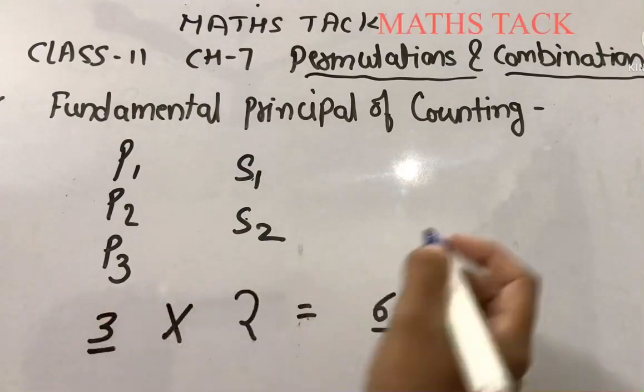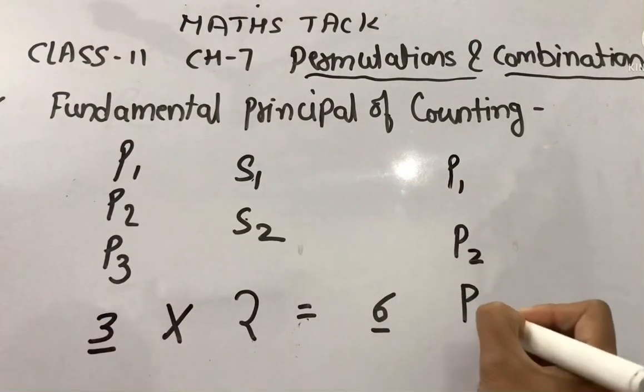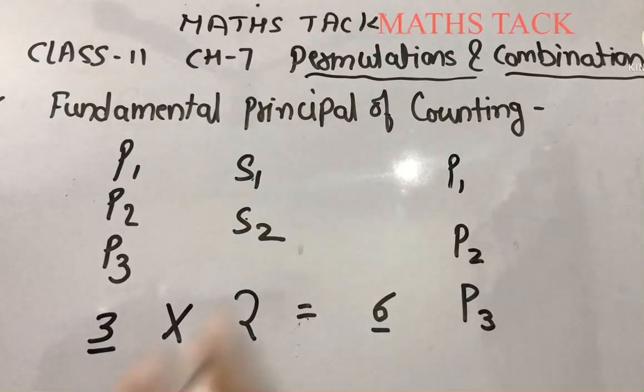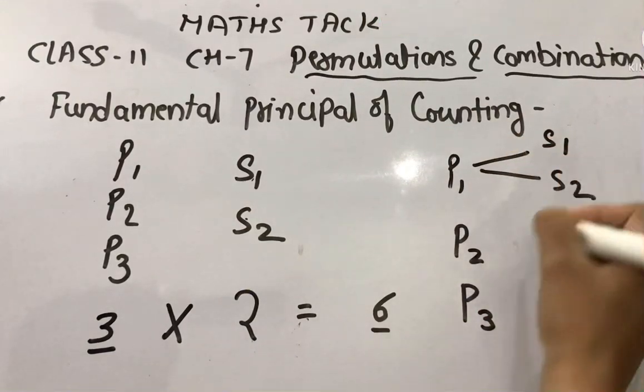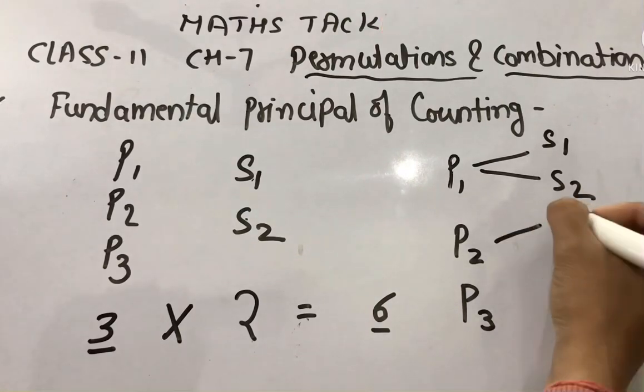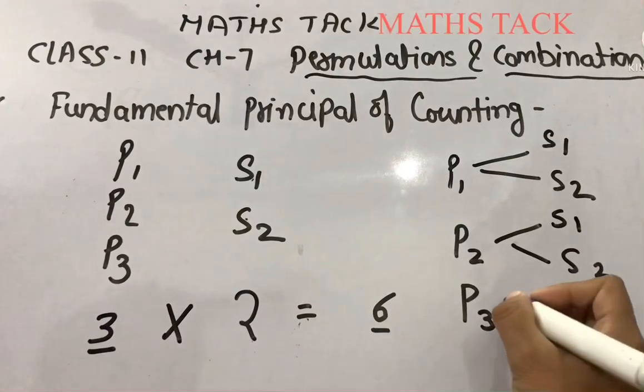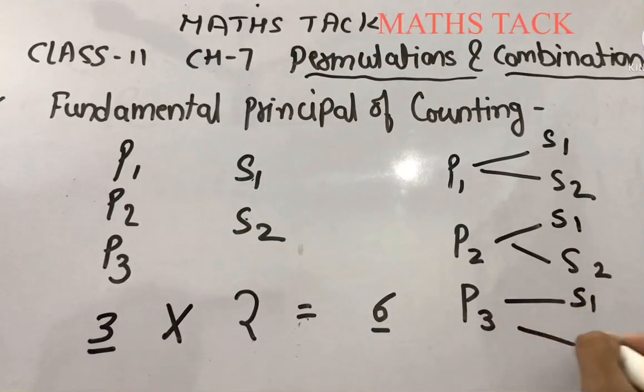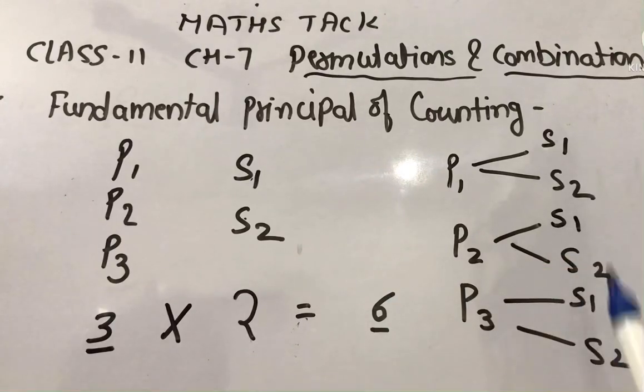shirt one or shirt two. P2 can be paired with shirt one and shirt two. P3 with shirt one and shirt two. So 2+2+2, total six ways are there to choose a pant and a shirt. Now we can consider one more problem.